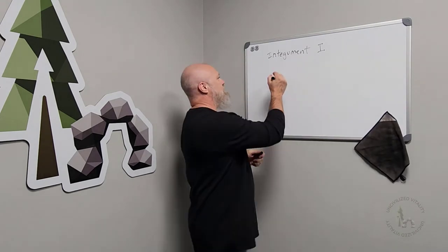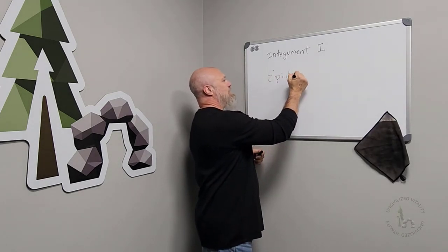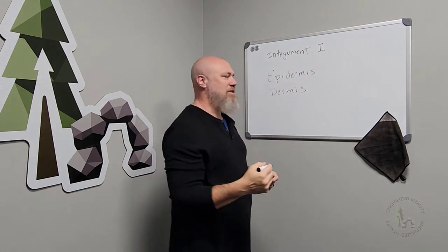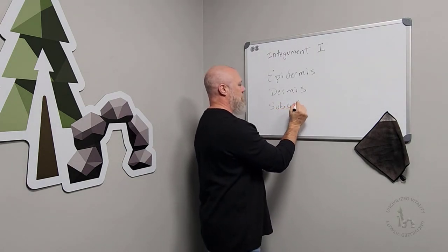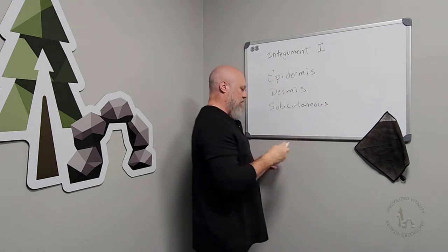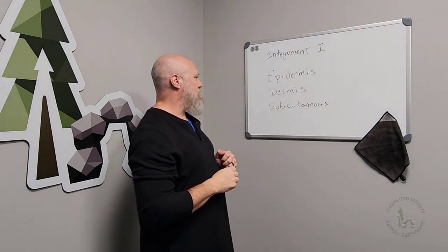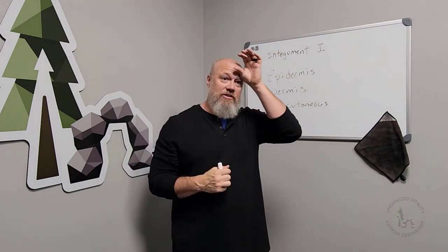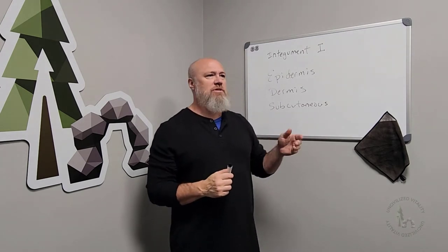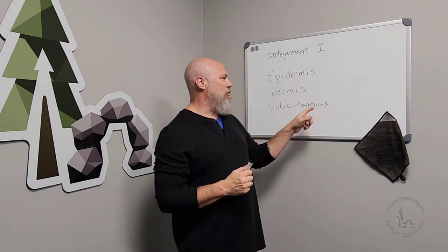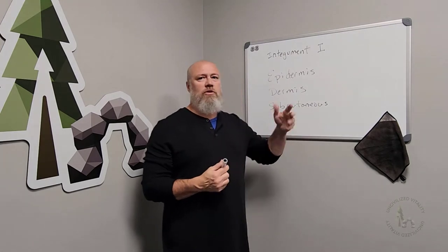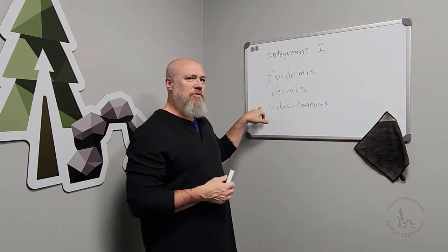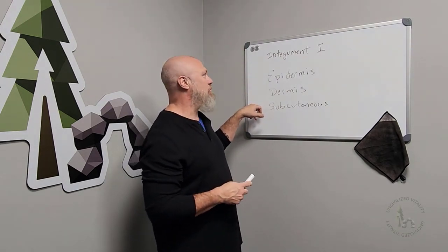Now let's talk about the layers of skin. You have the epidermis, the dermis, and the subdermis or subcutaneous level. Think of 'cutane' and 'derm' as the Greek and Latin terms for skin — that's why subcutaneous and hypodermic refer to the same thing, just one Greek and one Latin. So we'll say epidermis, dermis, and hypodermis, though I'll use 'subcutaneous' since it's a more familiar term.